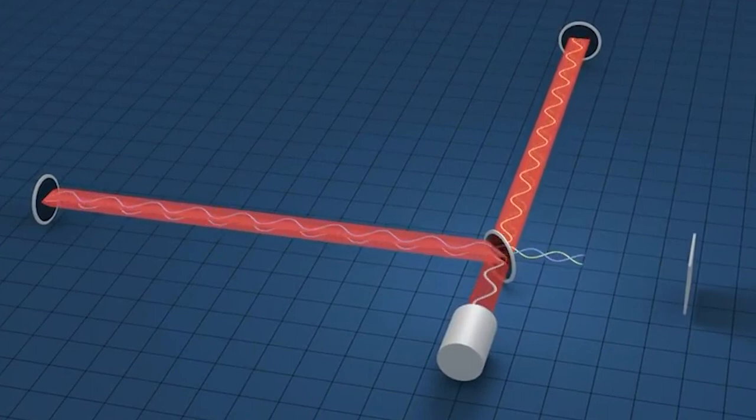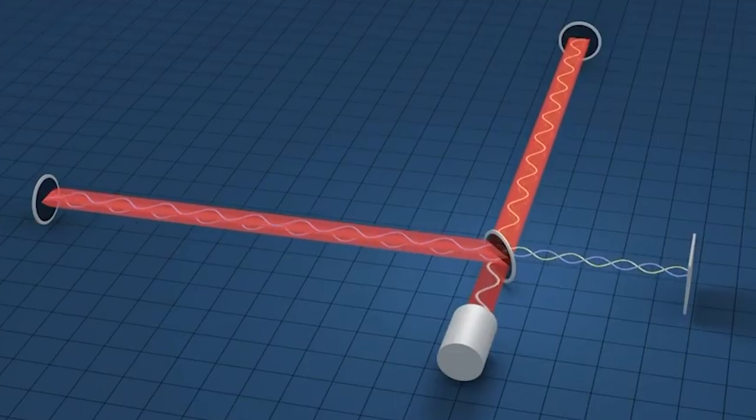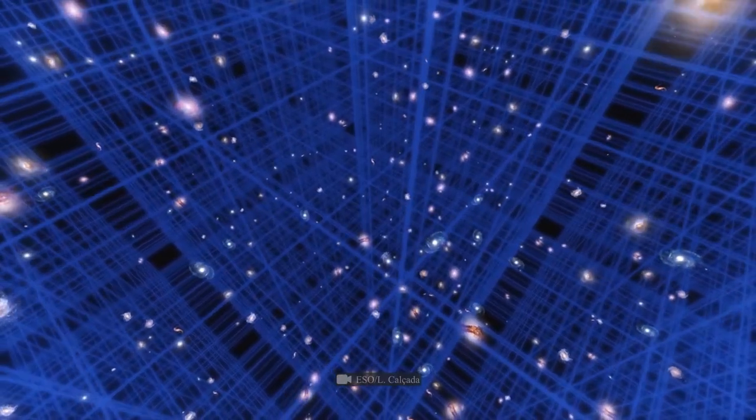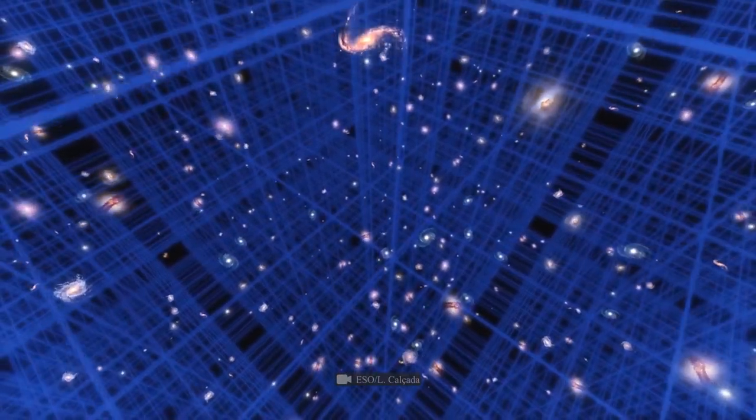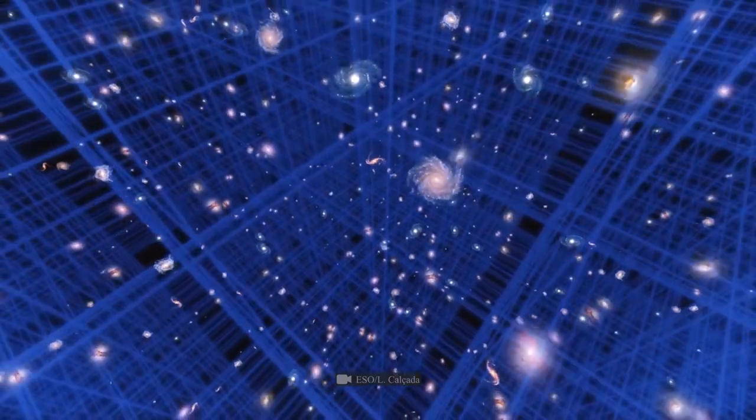Therefore, in order to look for them, scientists had to create enormous, incredibly sensitive optical devices known as laser interferometers. Over 1,000 researchers from 86 universities across the globe were involved in the Laser Interferometric Gravitational Wave Observatory, or LIGO, which unites these initiatives in an experiment.